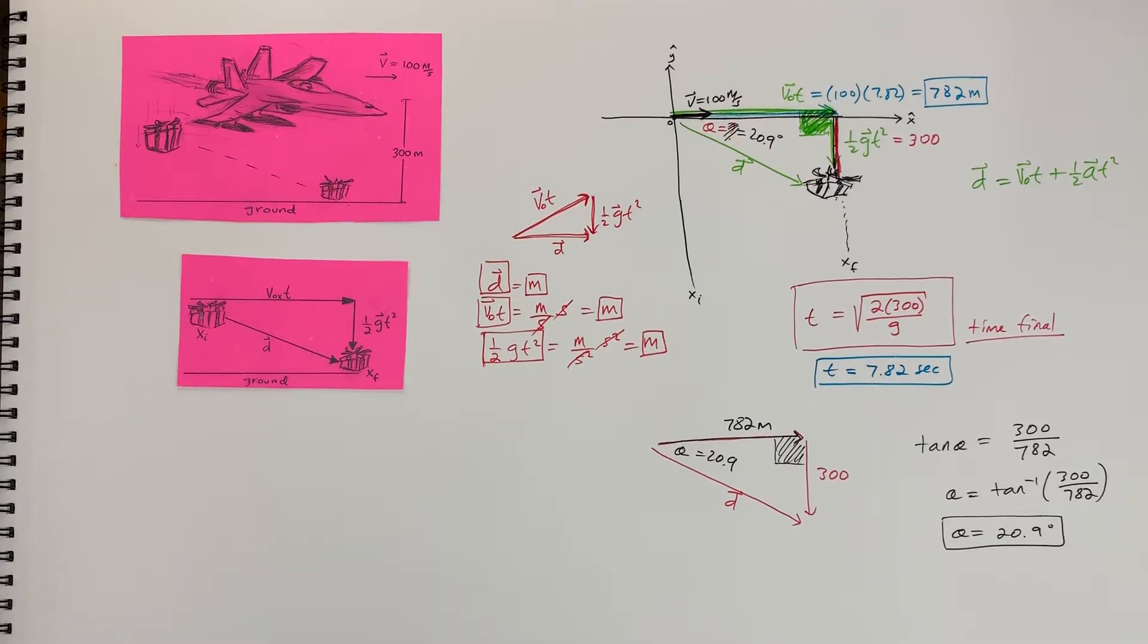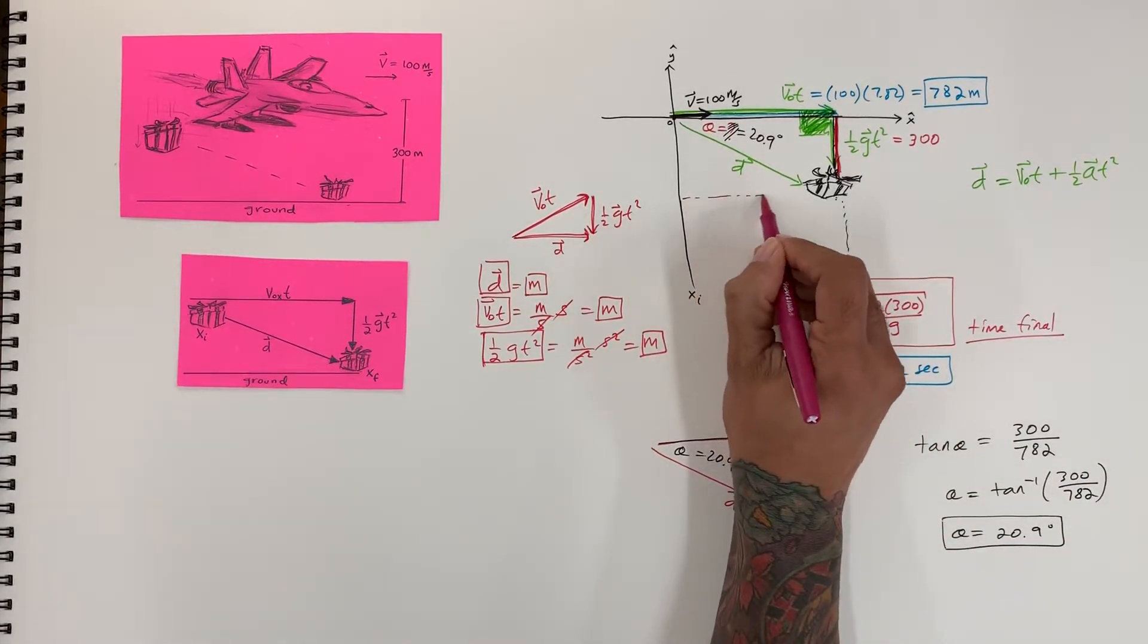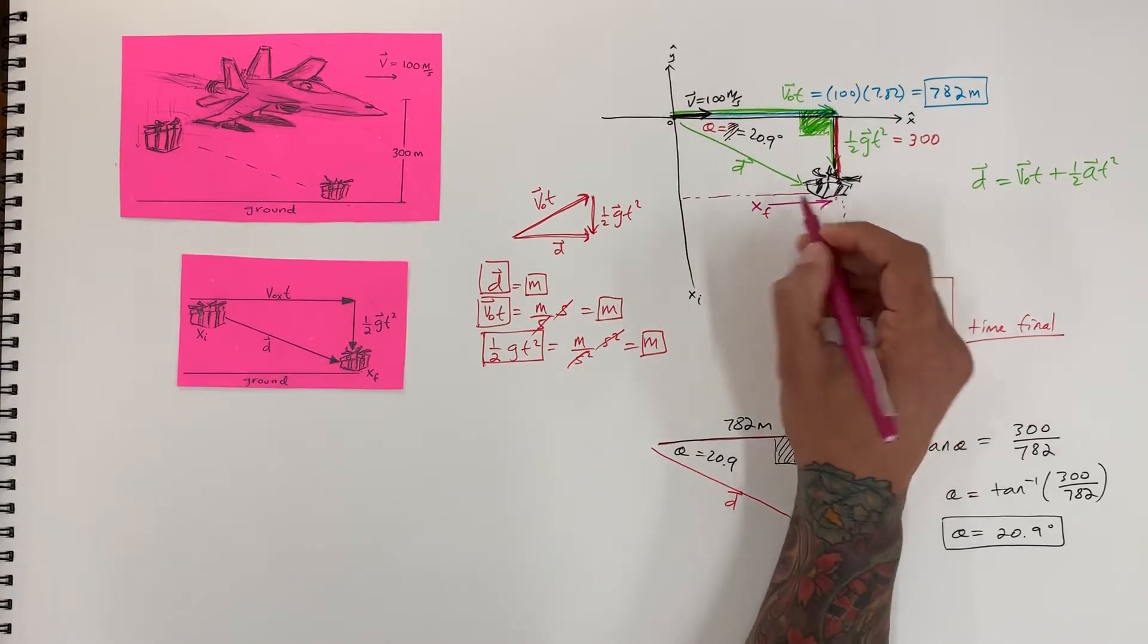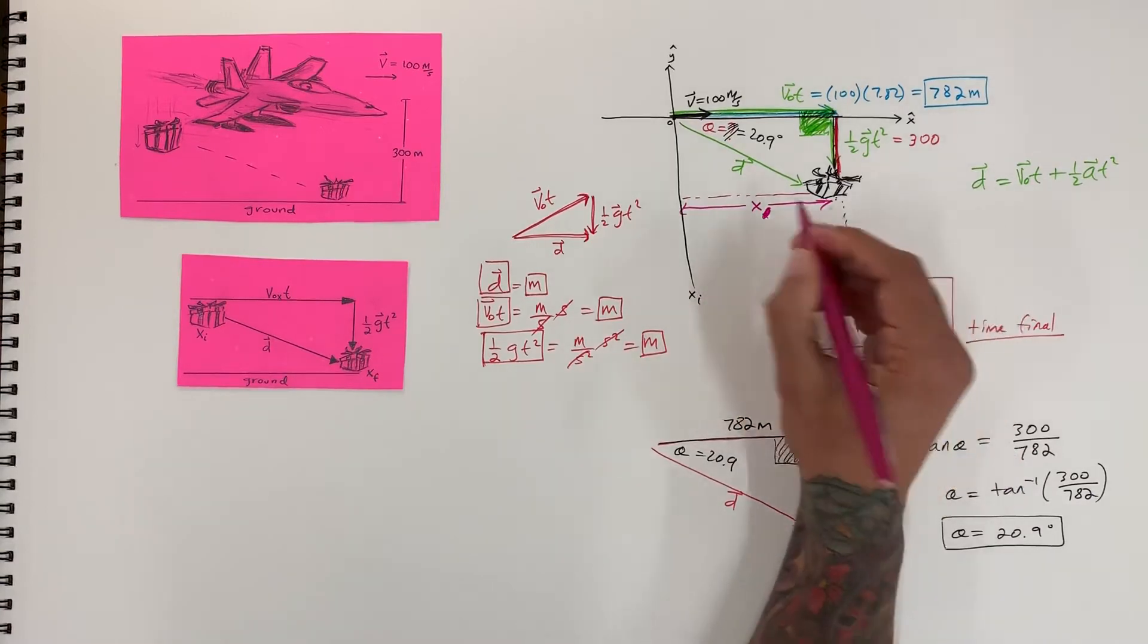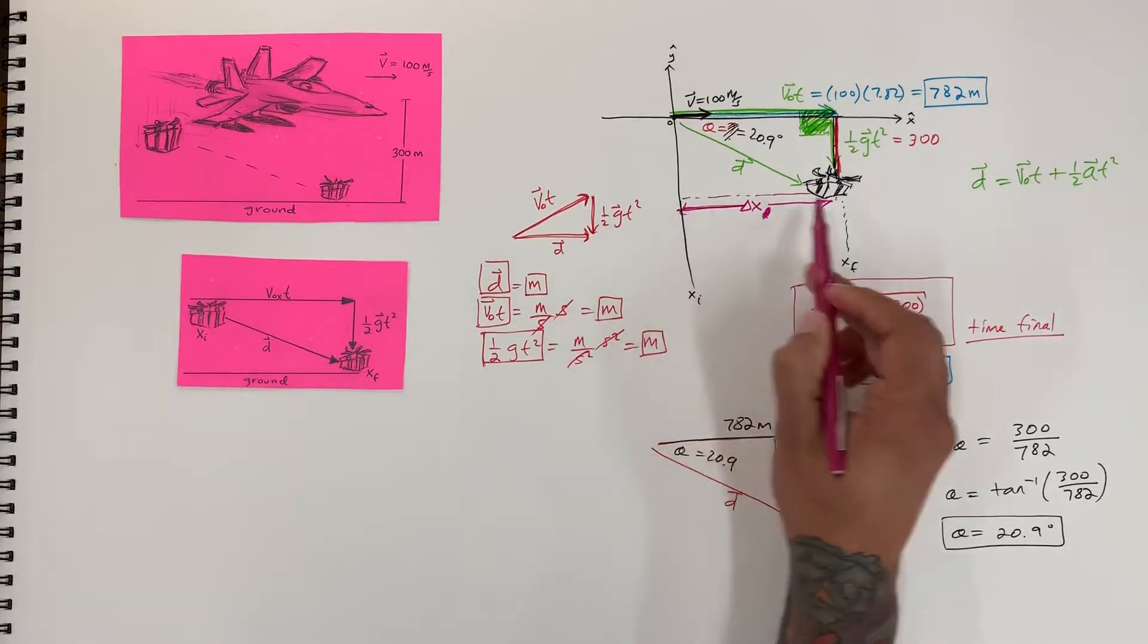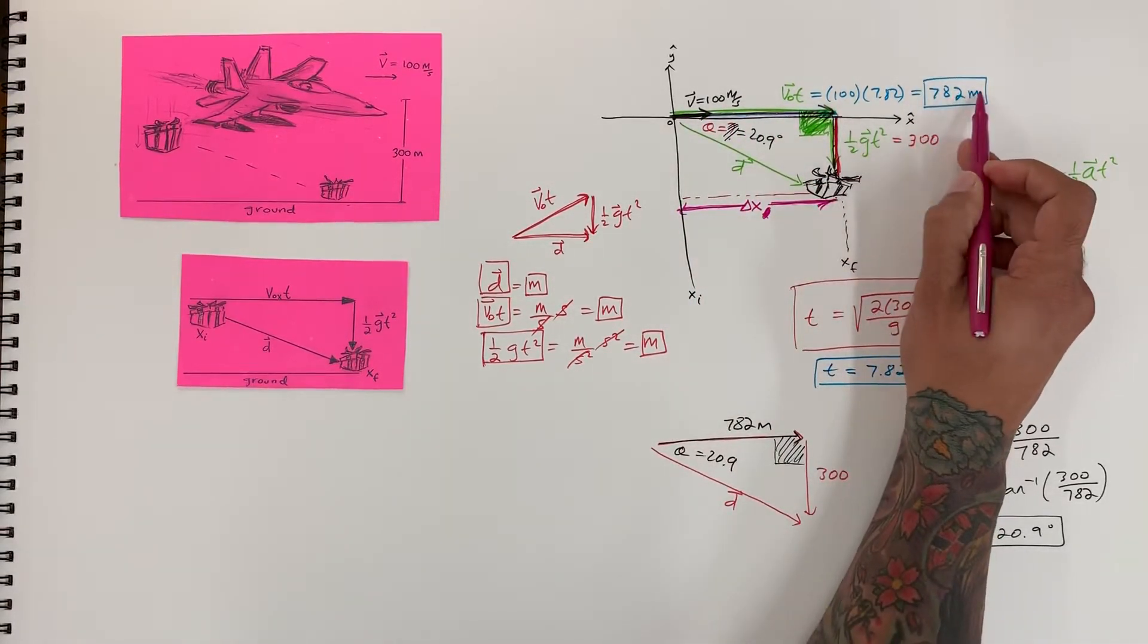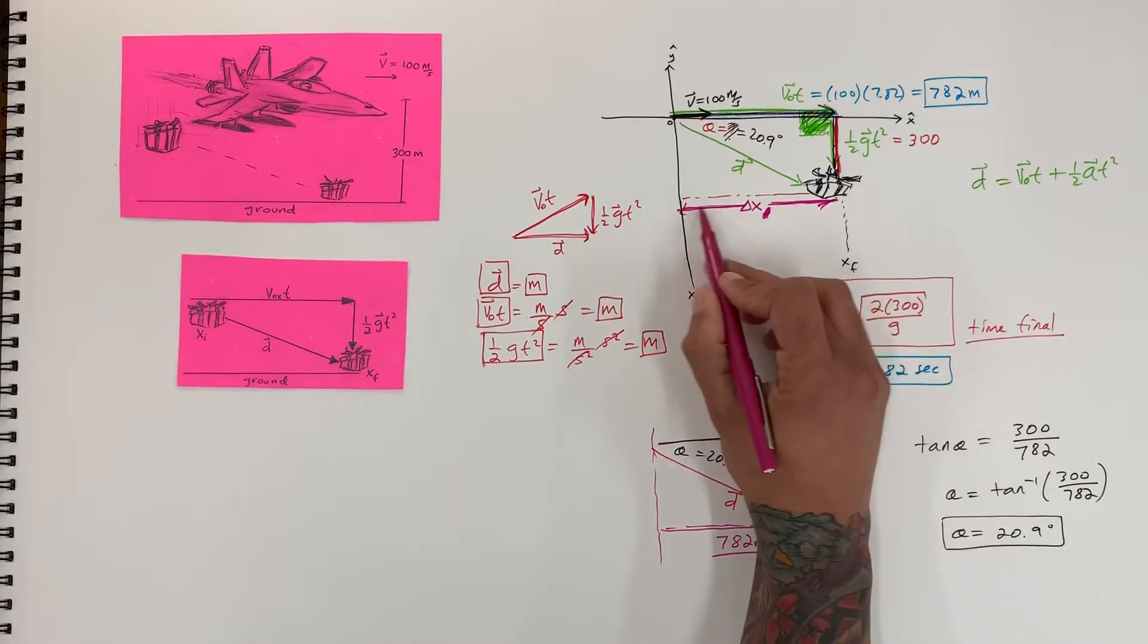so that's the angle that it fell at and if we just take a look at the information we already got then we know this length right here x final so really I should just write x x final is on this side x initial is on this side so the displacement in x my final minus initial and this side is a measurement in meters and so is this vector up here which we found to be 782 so we can just make this this side here equal to this side and we found our displacement or how far it went in the x direction